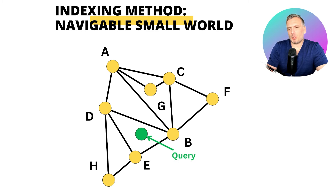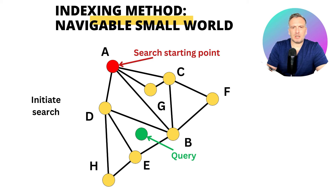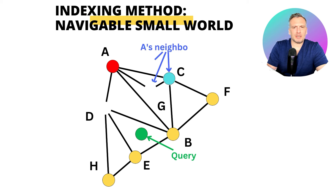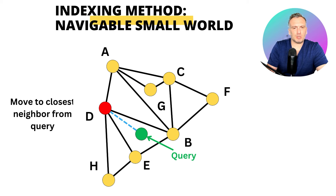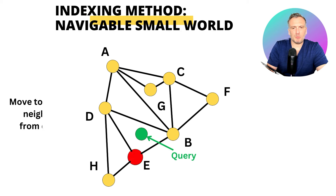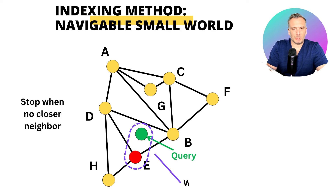Let's say we have a query vector and we want to find the nearest neighbor. We start the search at a specific point and look at the neighbors of A. We measure the distance from the query and move to the closest neighbors. We look for the neighbors of D and move to the position closest to the query. We cannot move anymore, so we found the nearest neighbor.